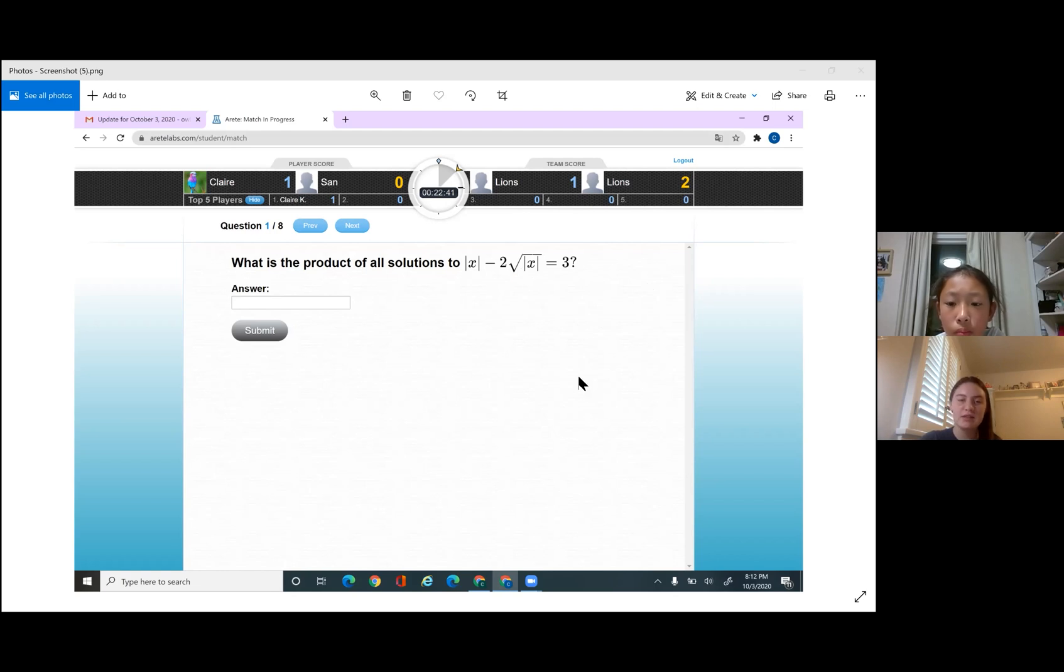So if you square x to get it out of the square root, x is just going to be x, so you got it out of the square root. But to the other side, to the 3, you have to square that too, so that's going to be a 9.